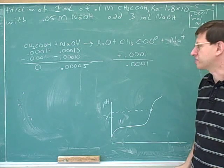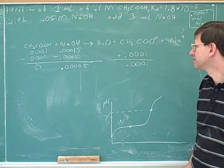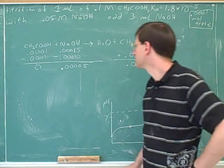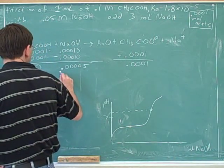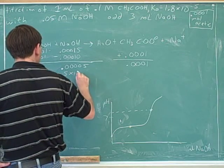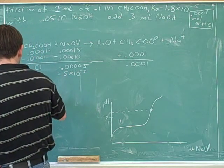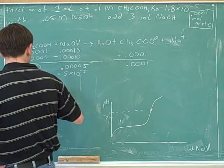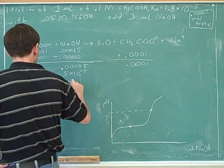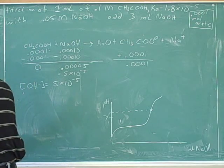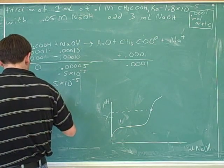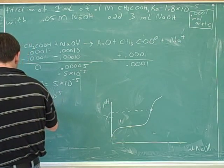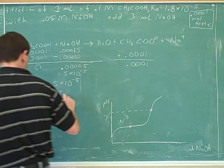So I can just find the pOH. That's right. So this is 5 times 10 to the negative 5. So the pOH is 5 and 4. So the pOH is between 9 and 10.